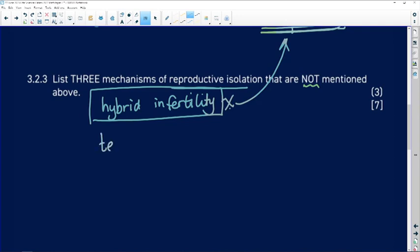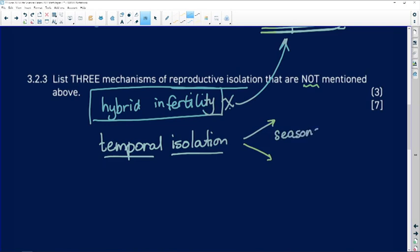We could mention temporal isolation. That's when the two species are kept isolated or separate because of time. Seasons in the year, for example, or time of day that mating happens. Anything to do with time we refer to as temporal isolation.